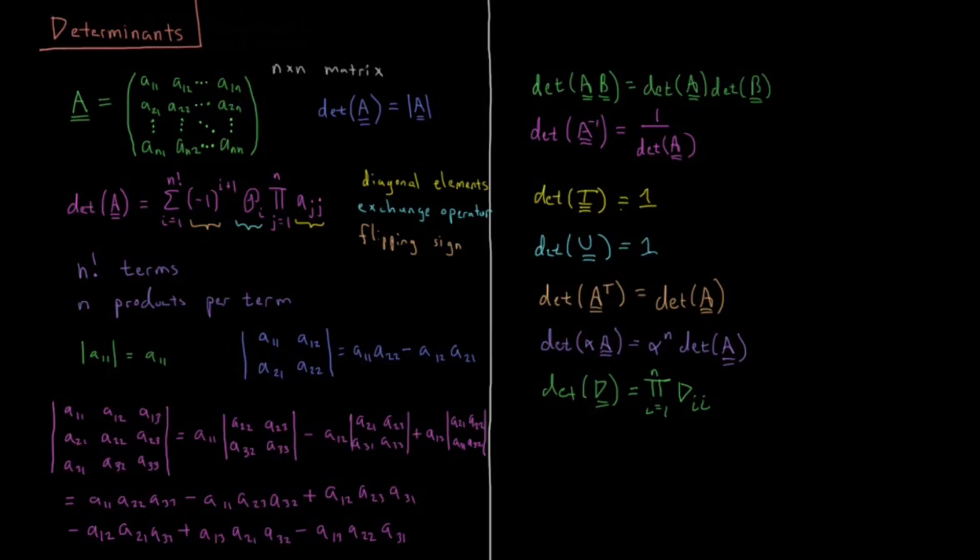All right. And then lastly of interest, which we'll talk about in a video or two, is that the determinant of a matrix is also equal to the product of all the eigenvalues of that matrix. So we'll discuss eigenvalues in a few videos. Those are very important properties of a given matrix and show up everywhere and all the time in quantum mechanics. So these are the eigenvalues of A, which we'll discuss in a video or two.